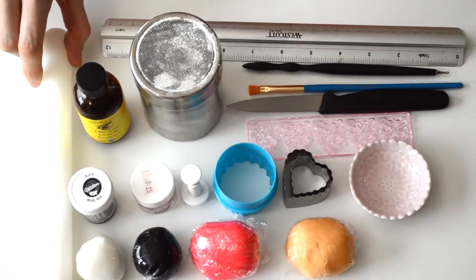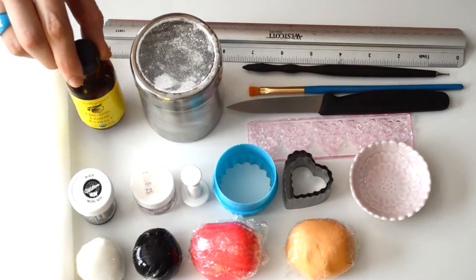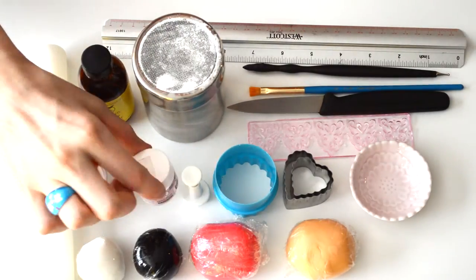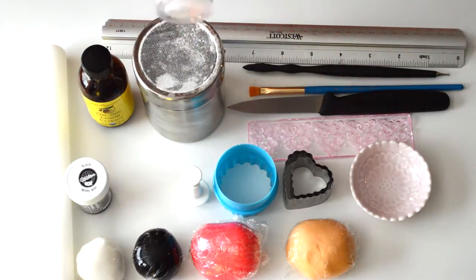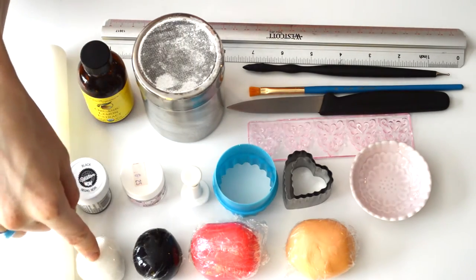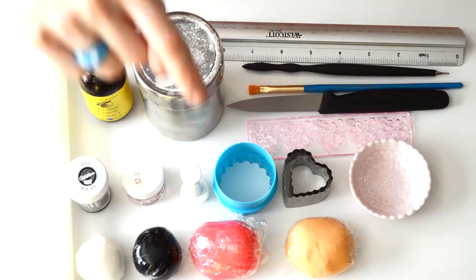To make these cupcakes you'll need a rolling pin, some lemon extract, black food dye, some disco dust (this is an optional extra), some white fondant, black fondant, and pink fondant.